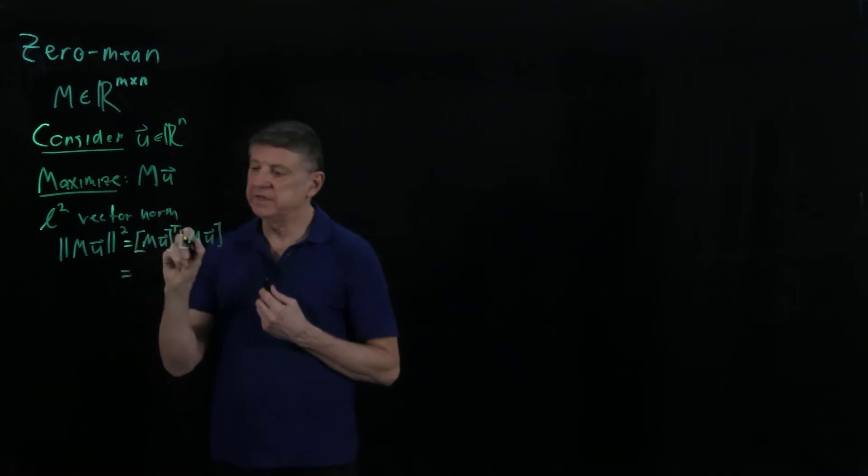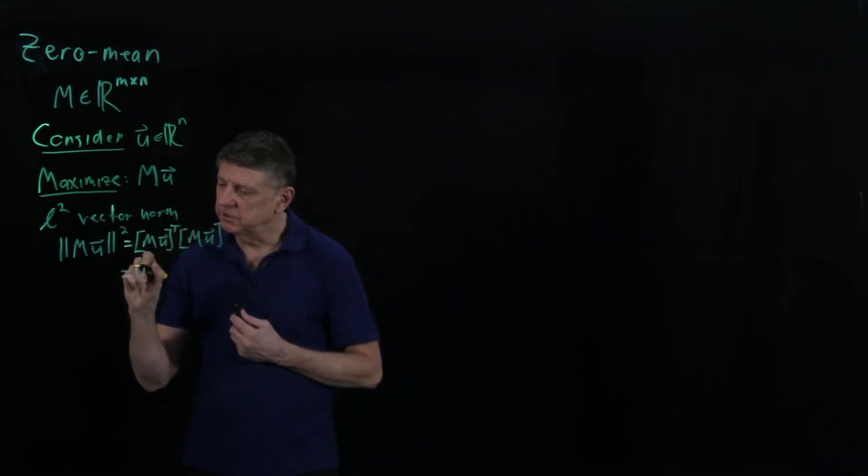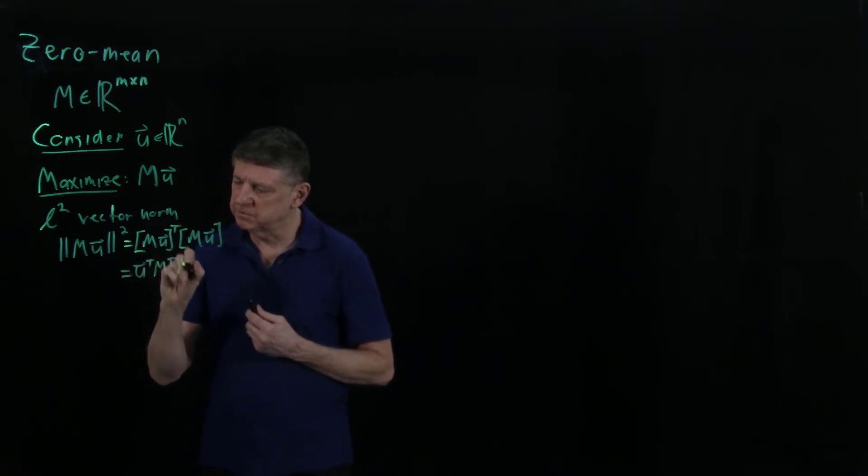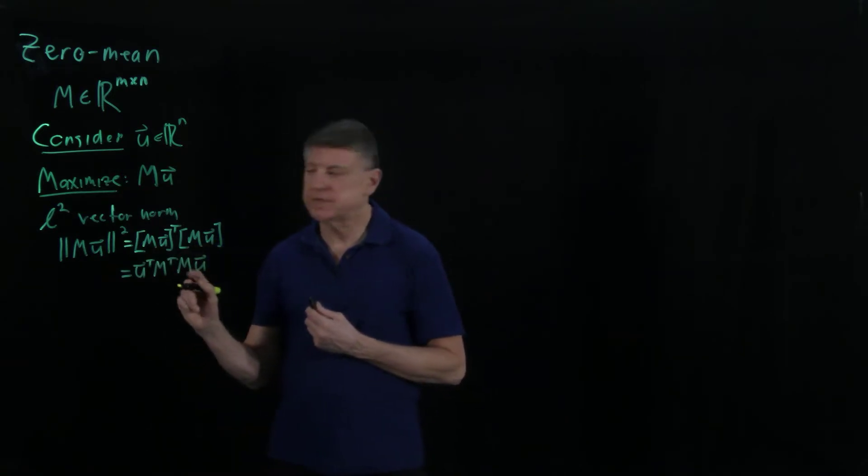If we then do this transposition, that will be U transpose M transpose M U. And what is M transpose M? That is the scatter matrix.